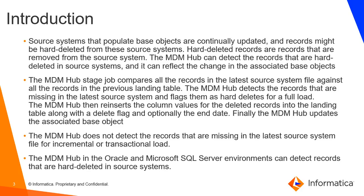The mechanism behind hard delete detection is that the MDM hub stage job compares all records in the latest source system file against all records in the PRL table. This configuration is very similar to delta detection, and that is why hard delete detection is workable only when delta detection is enabled. It works with the full data set and not with incremental or transactional loads. The MDM hub detects records missing in the latest source system file and flags those as hard deletes for a full load.